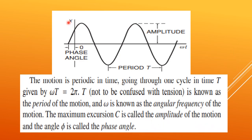This is the graph showing the variation of x with ωt — a harmonically varying function. This is called the time period. The motion is periodic, going through one complete cycle in a time T given by ωT = 2π, and T is known as the period of motion. ω is called the angular frequency of motion, C is the amplitude — the maximum displacement — and φ is the initial phase angle.